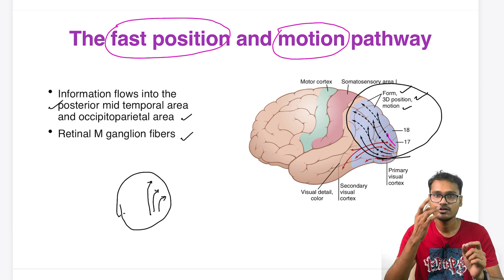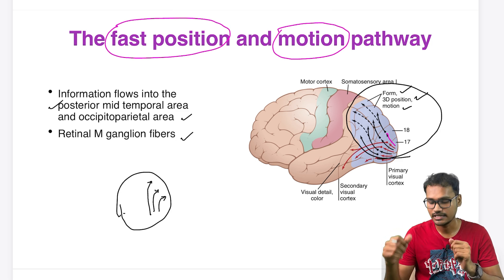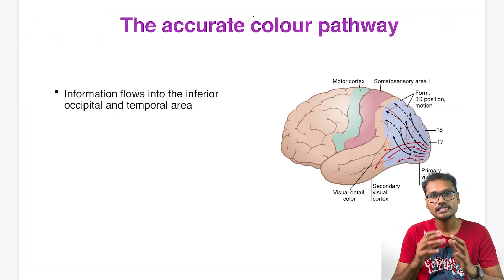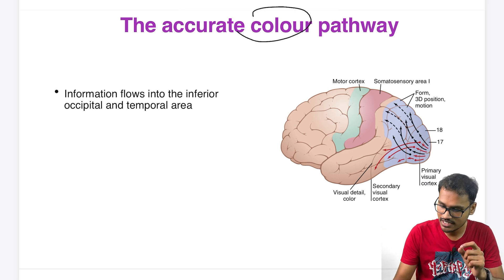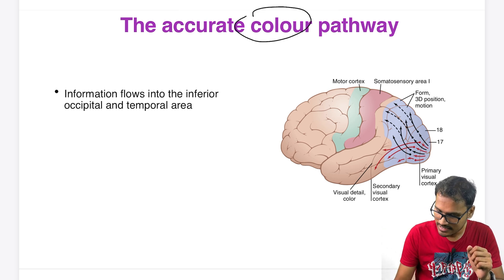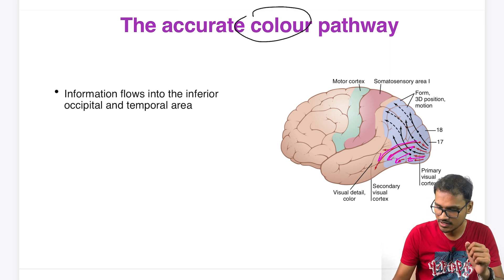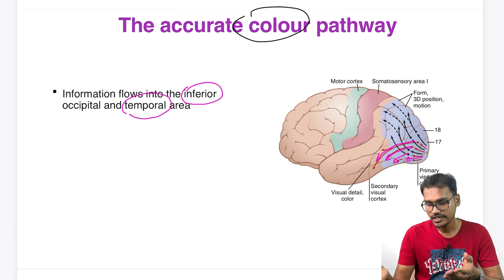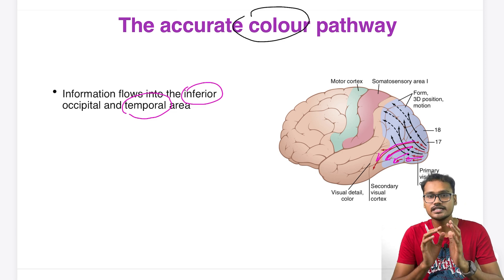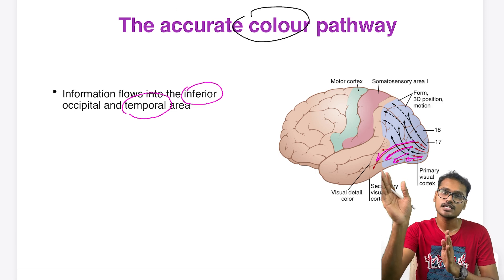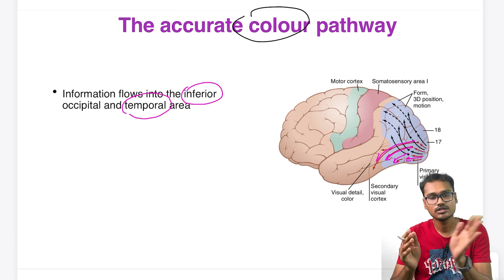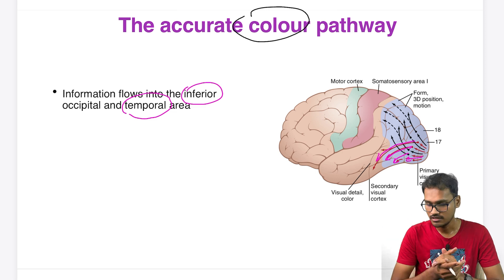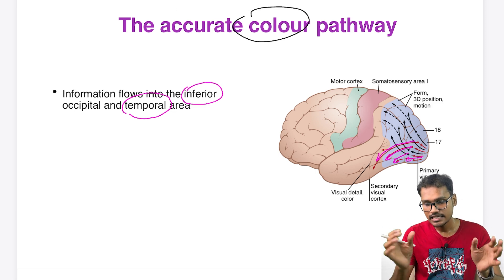The second pathway is the accurate color pathway. As the name indicates, it is for color perception. It goes toward the inferior occipital as well as some of the temporal areas, where color is perceived. So we have two pathways: one for fast motion and position, and the other for accurate color, each producing distinct meaning.